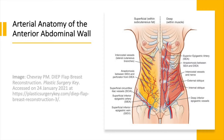By definition, the deep flap is perfused by perforators of the deep inferior epigastric artery, which originates from the external iliac artery just proximal to the inguinal ligament. After running superomedially for a short distance, it approaches the posterior aspect of the rectus abdominis muscle and divides into two branches, medial and lateral, which enter the rectus muscle to feed the muscle and the overlying skin.